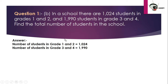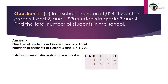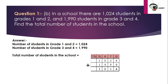Step three: they say 'find the total number of students,' so we need to do addition. We write all numbers in the correct place value order. The solution: 4 plus 0 is 4; 9 plus 2 is 11, carry 1; 9 plus 1 is 10, write 0 carry 1; then 1 plus 2 plus 1 gives 3. The answer is 3,014 students in the school.